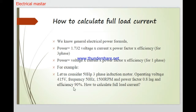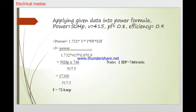Let's take a look at an example to calculate the load current. We have the following data: Motor HP rating 50, Voltage 415 V, Power Factor 0.8, and Efficiency 0.9. The three-phase formula is: Power = √3 × Voltage × Current × Power Factor × Efficiency.